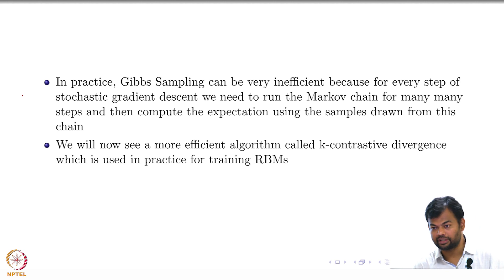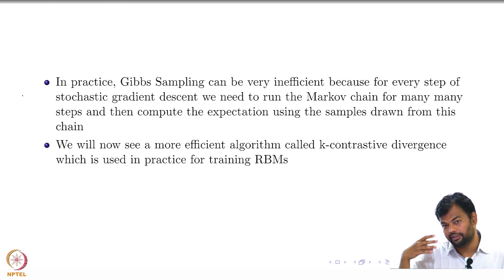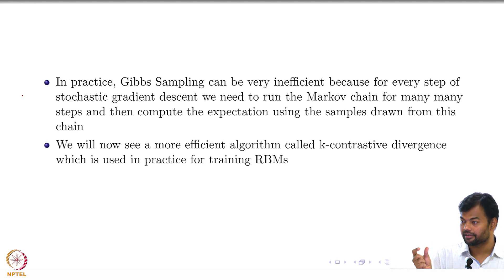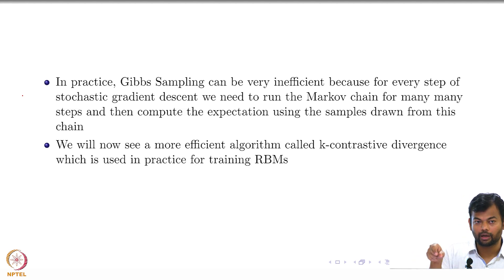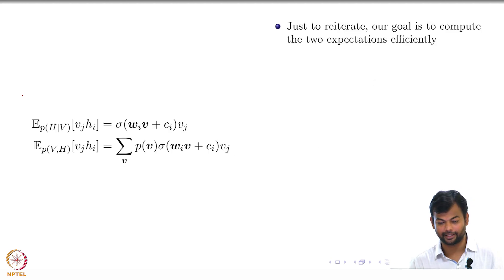In practice, we use something known as K-step contrastive divergence. We had this expectation — in reality we should have done the summation over infinity. We approximated infinity by some R in Gibbs sampling, and now we are going to approximate it by something even more aggressive than R.